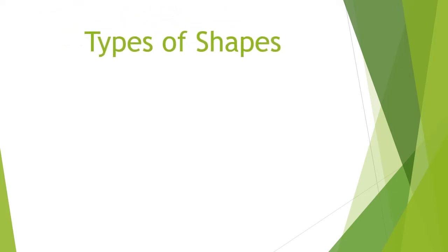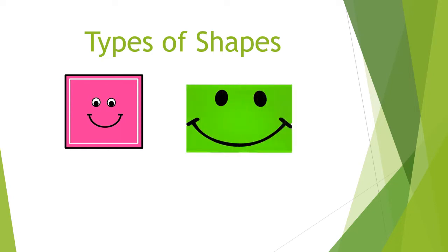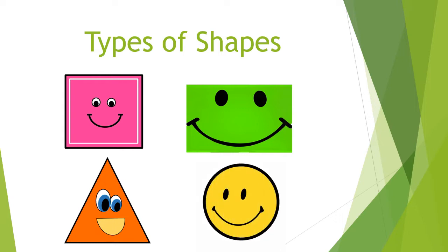Children, just see what type of shapes I have got for you. I have got a square, a rectangle, a triangle, and a circle. What kind of shapes are these? Can you guess? Yes, these are the plane shapes.